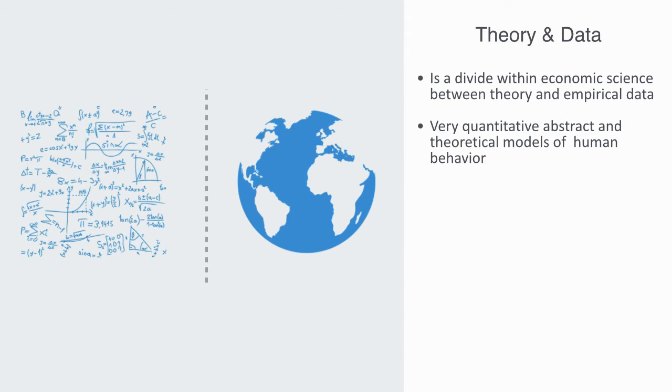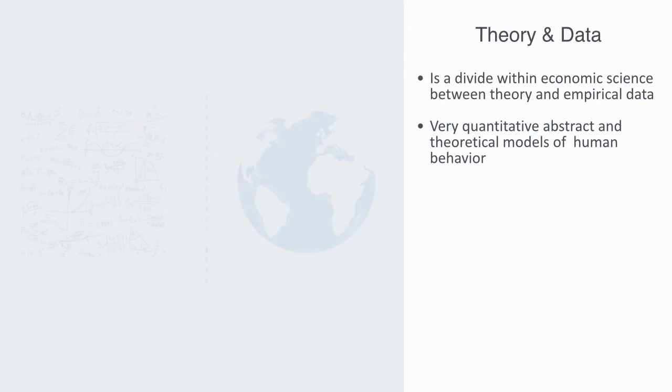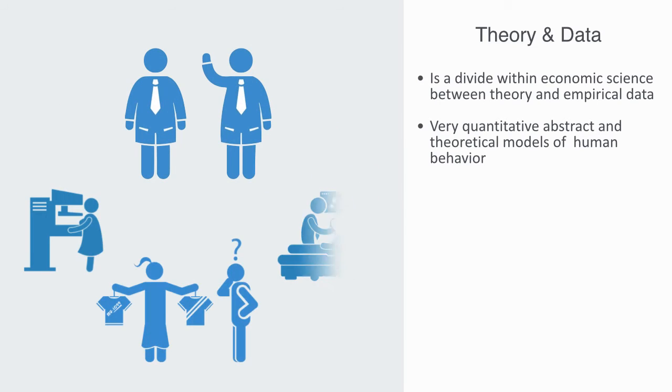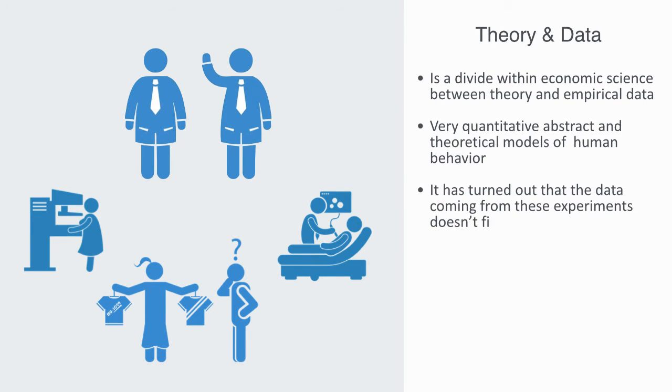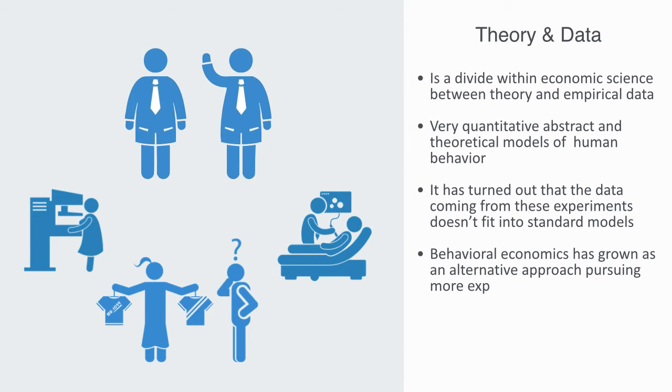Empirical data was seen to be somewhat redundant. Over the past few decades, researchers in neuroscience, psychology, and new areas of economics have started to conduct experiments, and it's turned out that the data coming from these experiments doesn't fit very well with the standard model. In order to try and describe what is coming out of the data, behavioral economics has grown as an alternative approach, pursuing more experimental, data-driven methods,